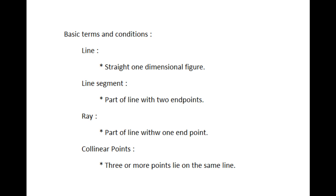First one is line. A line is a straight one-dimensional figure having no thickness and extending infinitely in both directions. Next, line segment. A part of a line with two end points is called a line segment. Ray: a part of a line with one end point is called a ray.